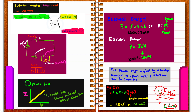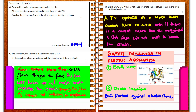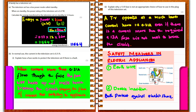In an exam-style question, a television set has a standby mode with a power rating of 0.27 watts. To calculate the energy transferred in 12 hours: energy equals power times time, converting 12 hours to seconds by multiplying by 3600. Working this out gives 11,664 joules.